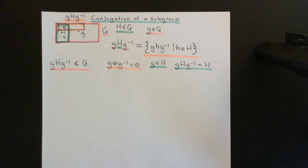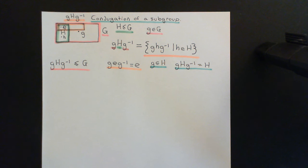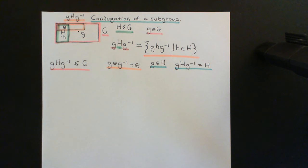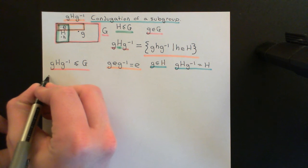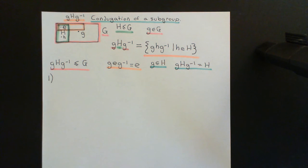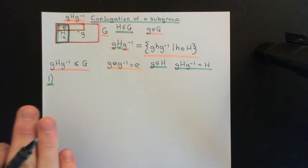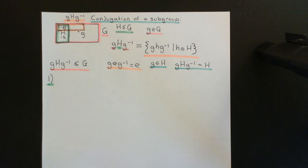What I now want to do is actually prove that this conjugate of the subgroup capital H under the element little g is a subgroup in its own right. As always, when trying to show that a subset of a group is a subgroup, I don't need to worry about axiom two — associativity — because the inherited composition law always obeys it. So I just need to make sure of axiom one, three, and four.